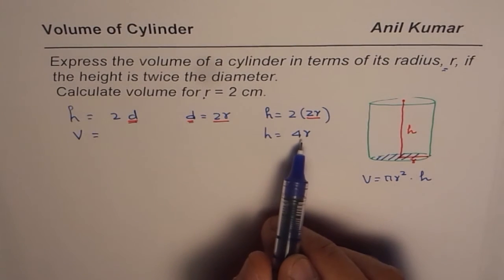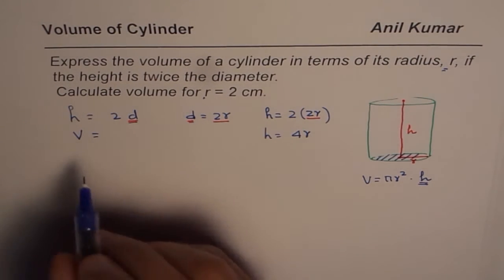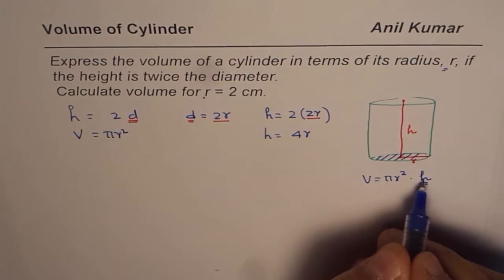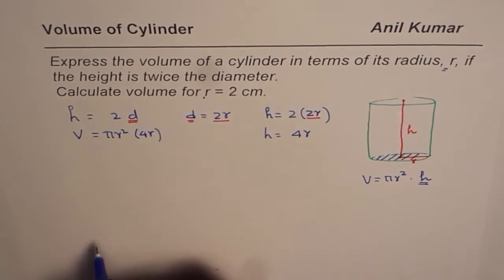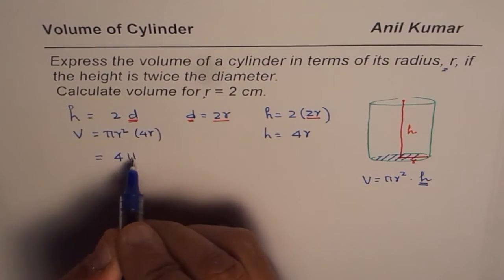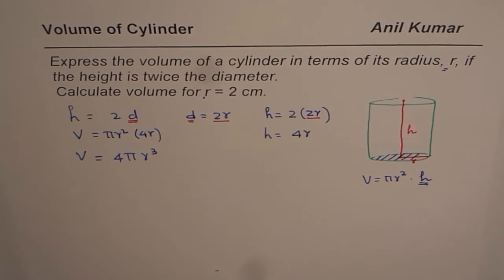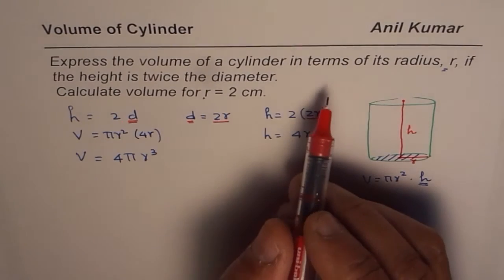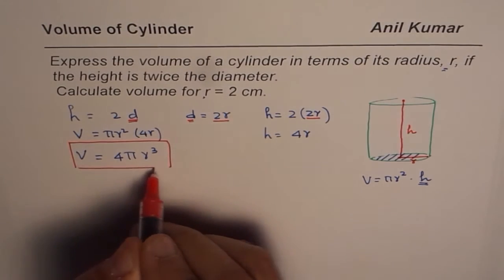Now since height is 4 times r, we can also replace this in that particular formula for volume. So let me now rewrite the volume in terms of radius. So we have pi r square times height. So instead of height h, we will write 4r, 4 times radius. So that becomes volume in terms of just radius. Let us open this bracket. 4 pi r square times r is cube. So we get volume as 4 pi r cube for this particular situation. So now we know that the volume of a cylinder where the height is twice the diameter can be written as 4 pi r cube.